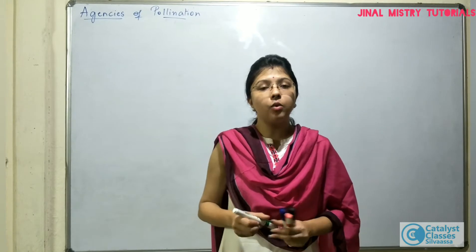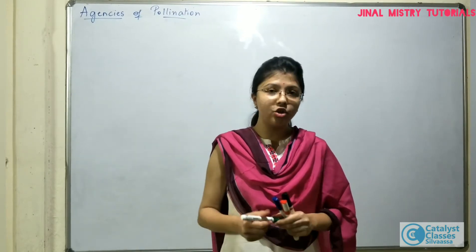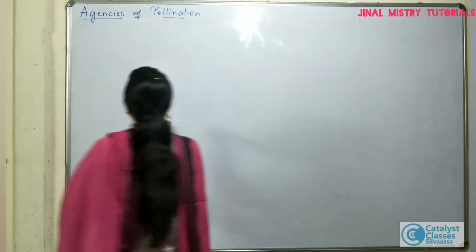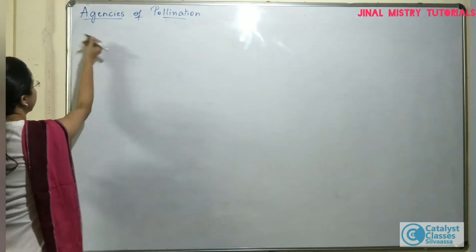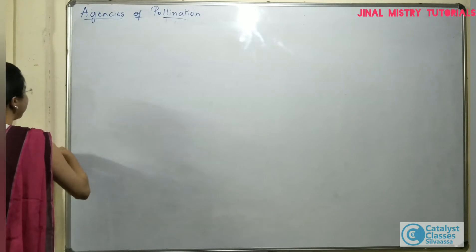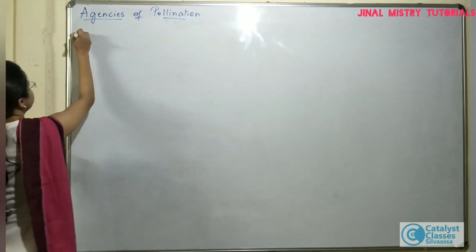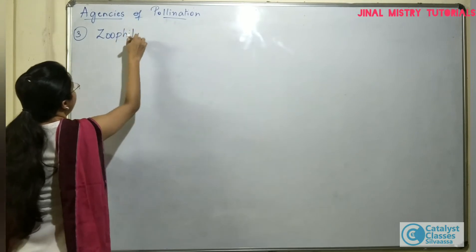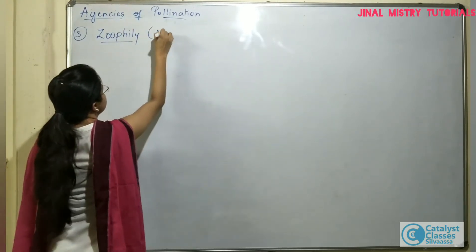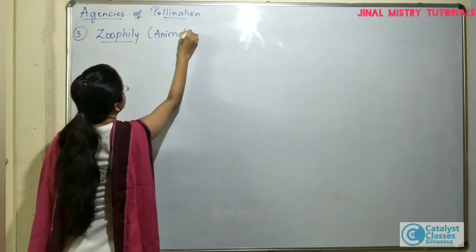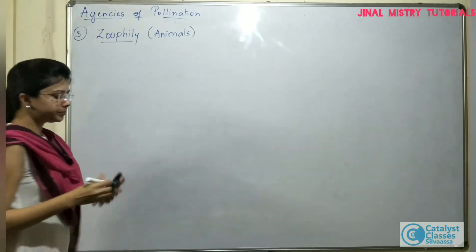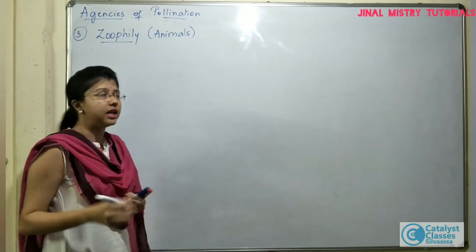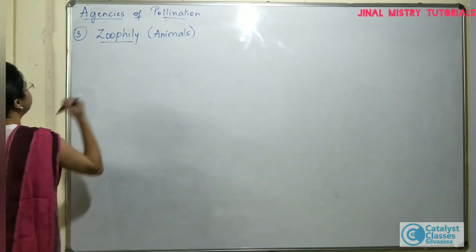Hello friends. Now we will discuss about the next agency of pollination, that is animals. And since the agency is animal, the type of pollination is called as zoophily. Pollination which takes place by animals will be termed as zoophily. There are different groups of animals which are involved as pollinating agents. We will study different examples.